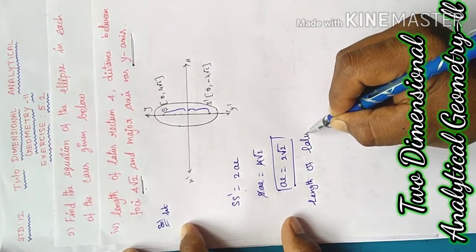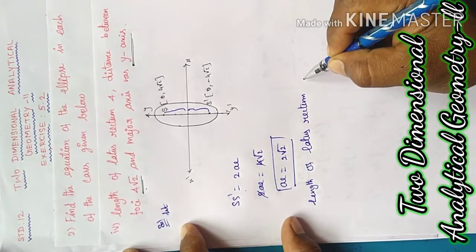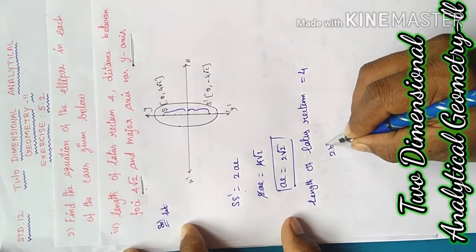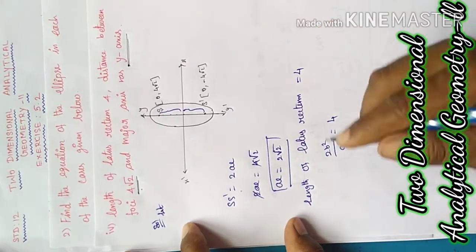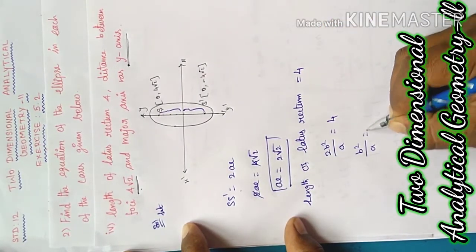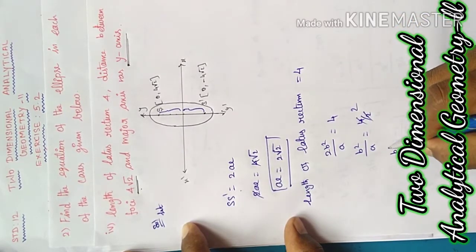Length of latus rectum: l equal to 4. Formula: 2 b square by a equal to 4. Therefore b square by a equal to 2, so b square equal to 2a.